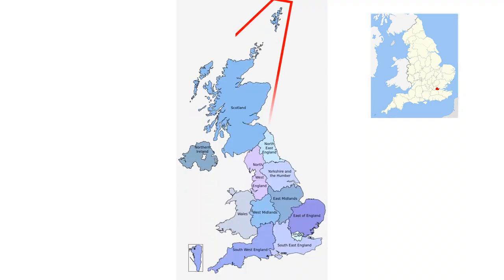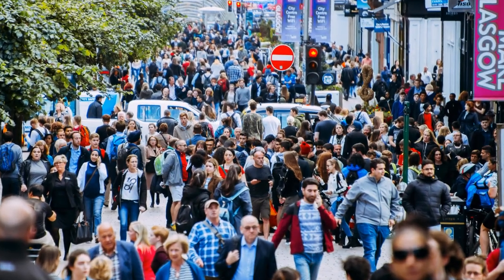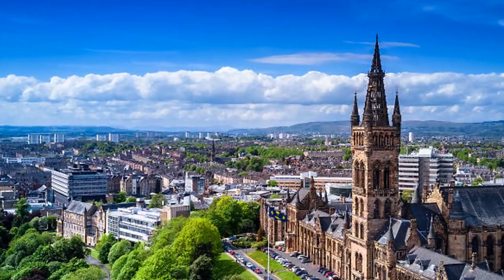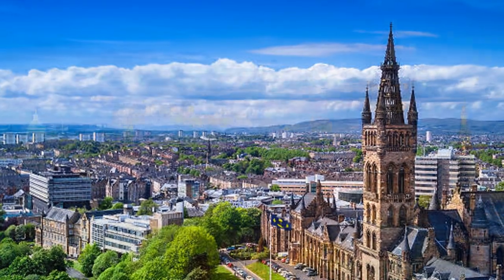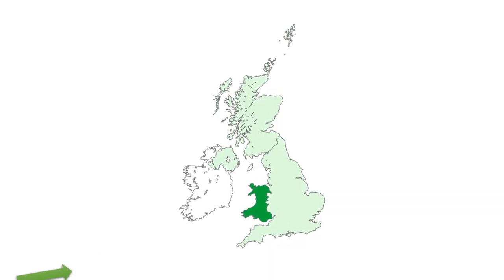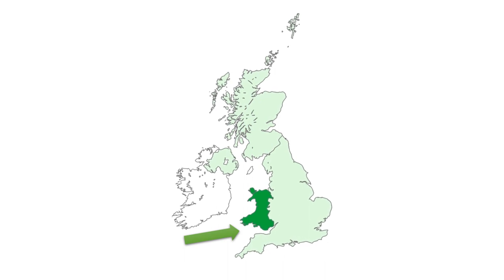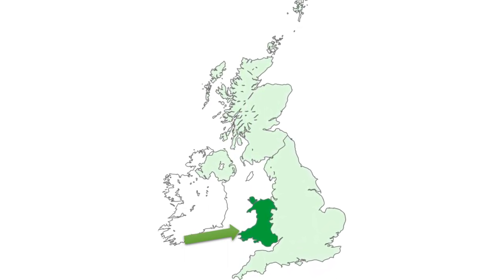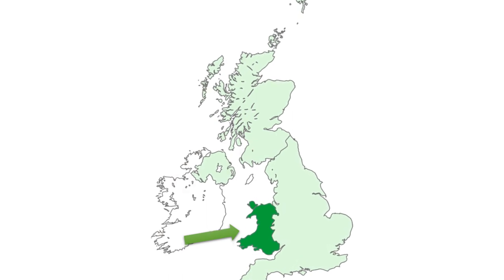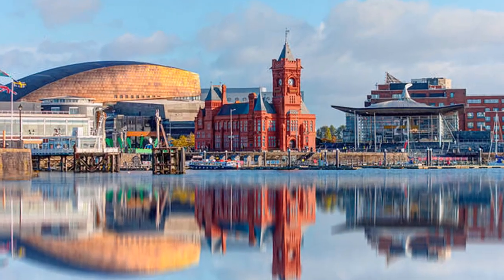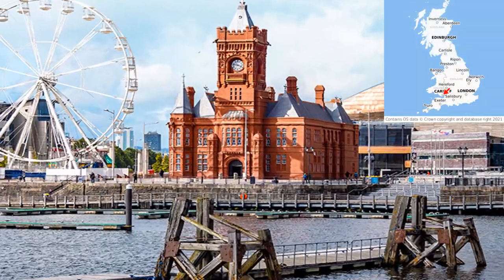Scotland sits on the northern third of the island of Great Britain. The population is 5 million. The largest city is Glasgow and the regional capital is Edinburgh. Wales is the third region on the island of Great Britain, taking the western side of the central southern part of the island. Wales' population is 3 million, and the capital and largest city is Cardiff.